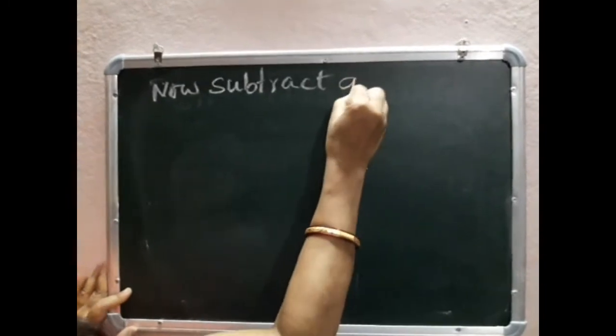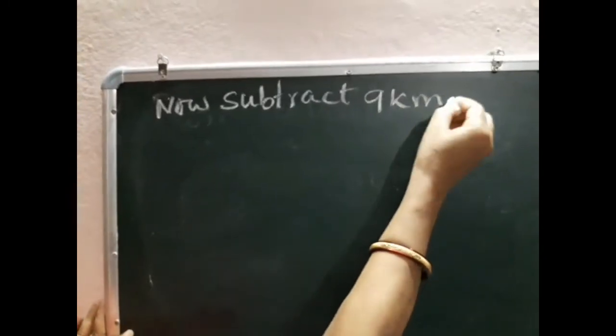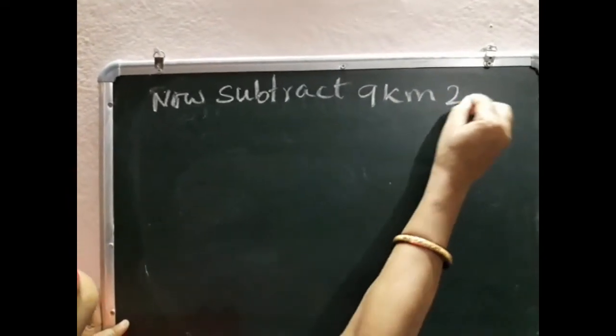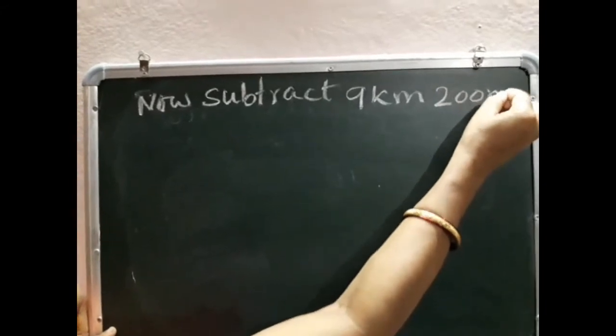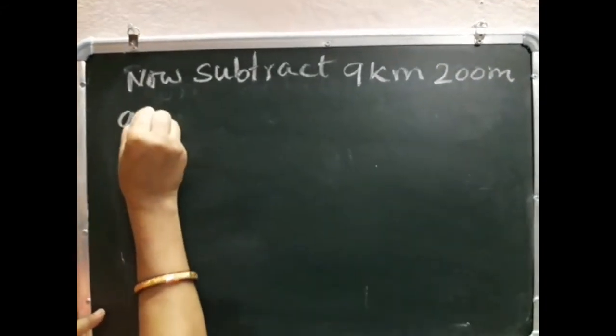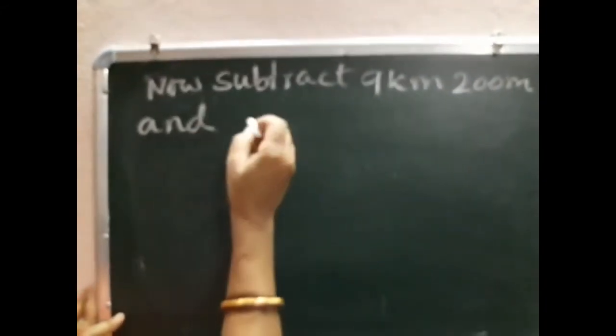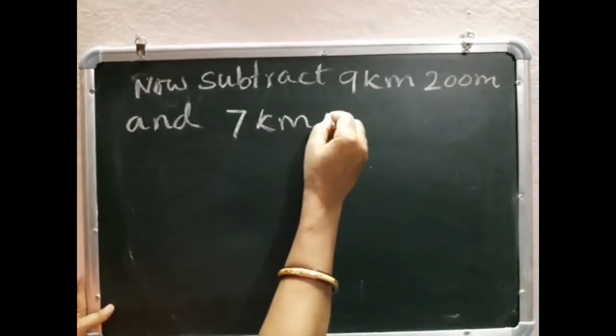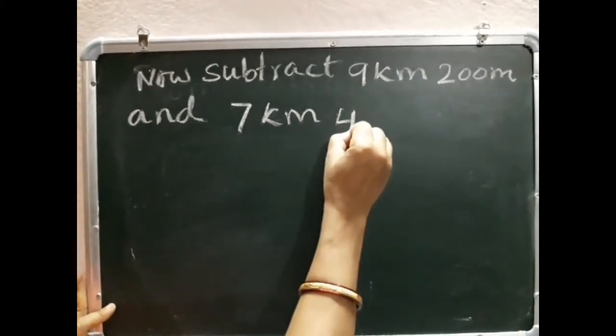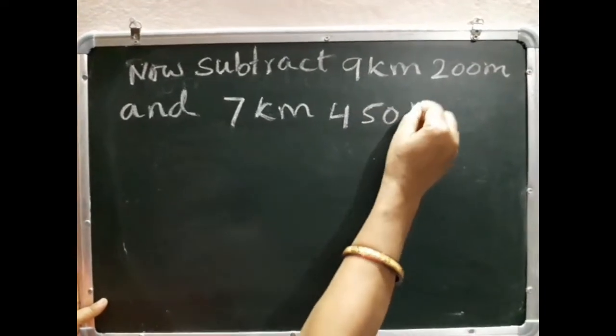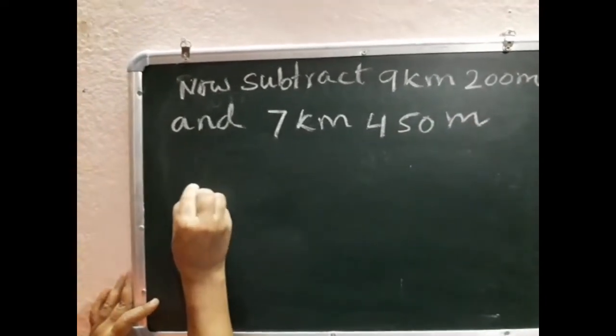Now subtract 9 kilometer 200 meter and 7 kilometer 450 meter. Arrange the numbers.